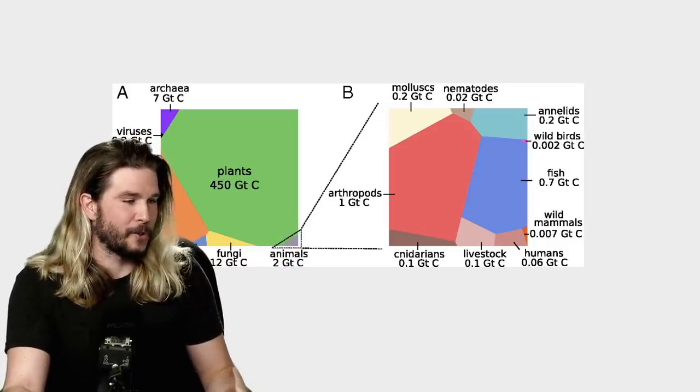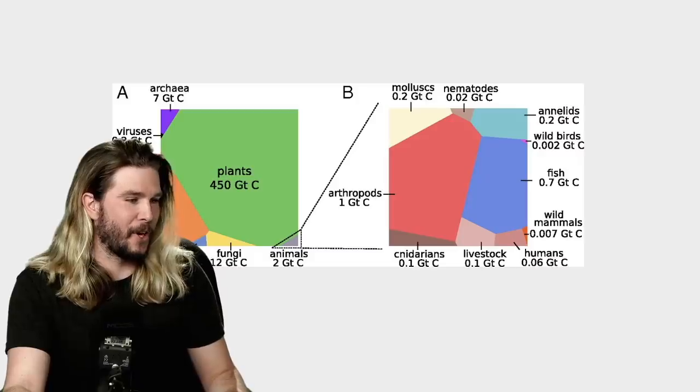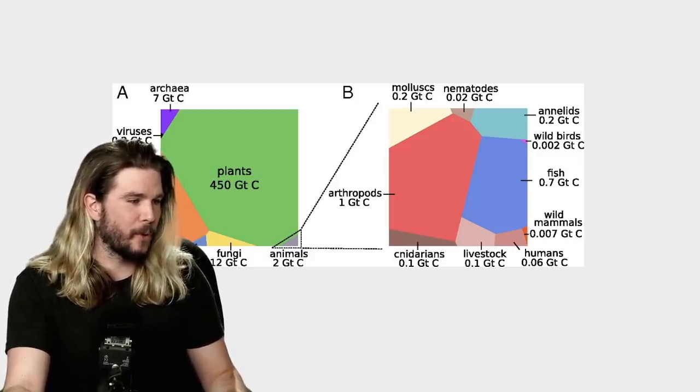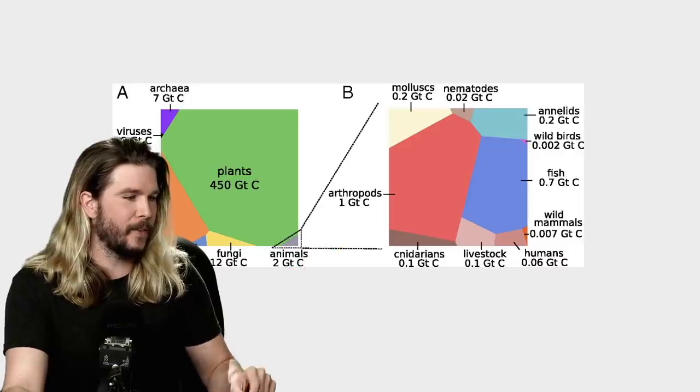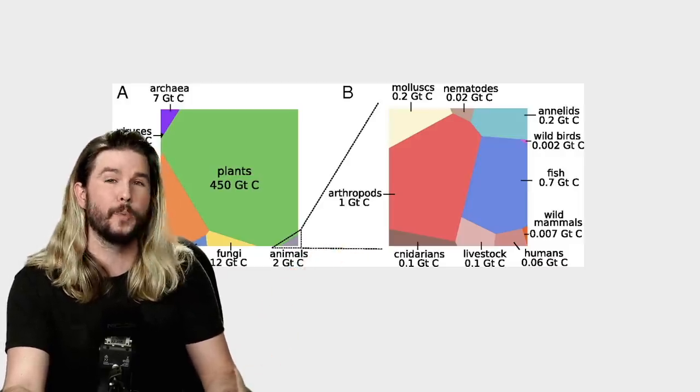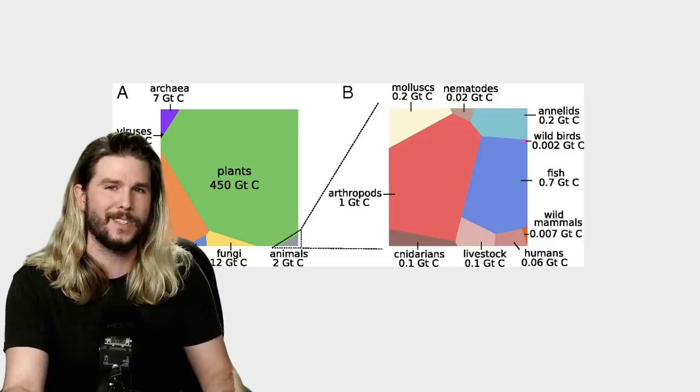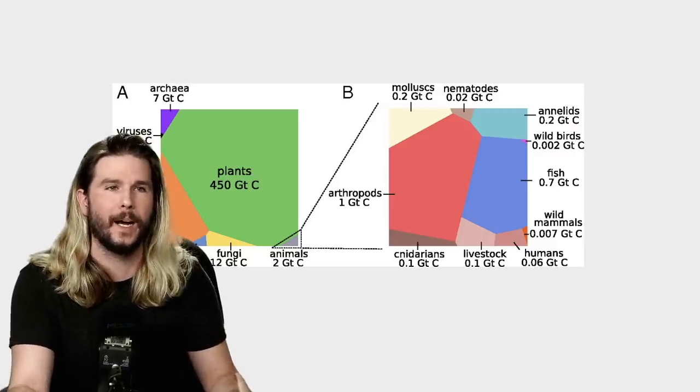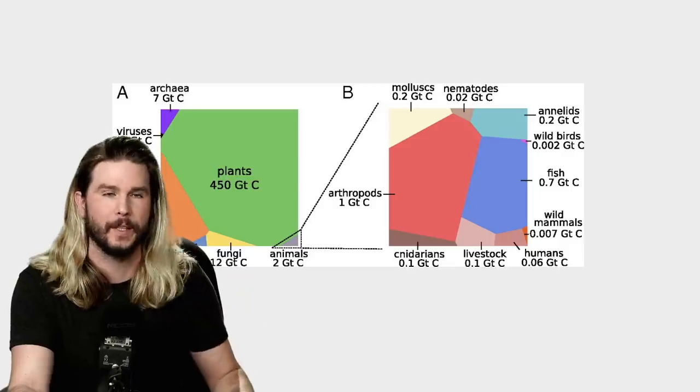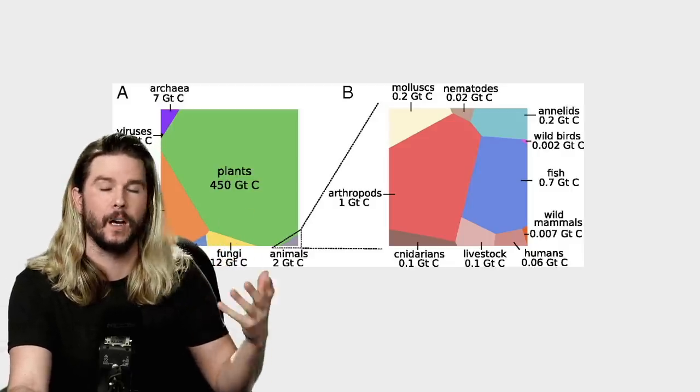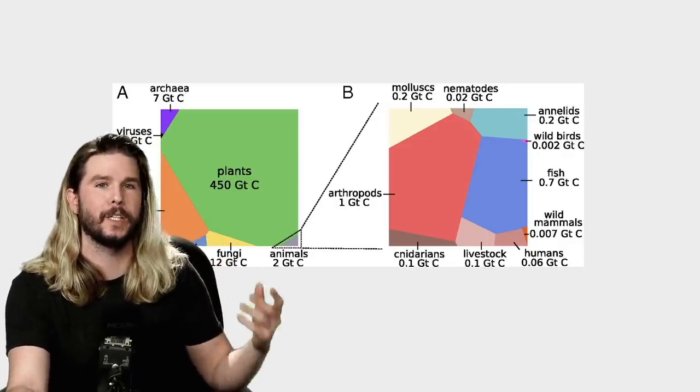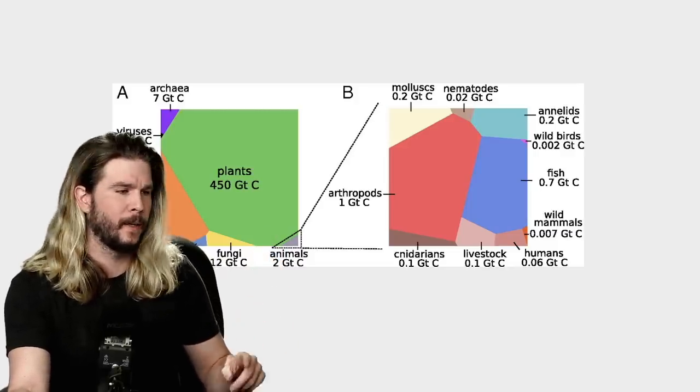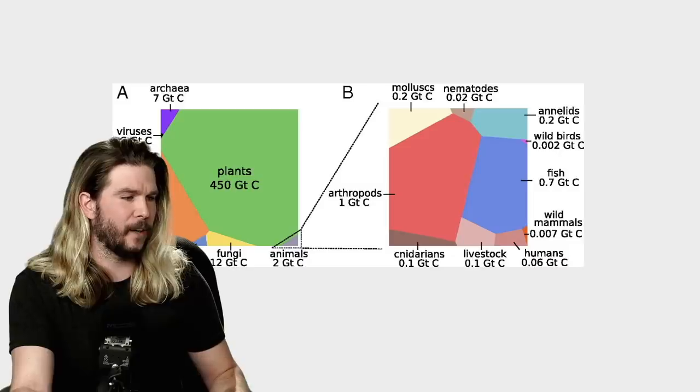There's a lot of mollusks, an awful lot of arthropods, a lot of fish of course. But look way down in the bottom right corner there: humans at 0.06 gigatons of carbon. So you're multiplying the kilograms by a trillion or something like that—a billion times a ton, which is a thousand kilograms, so a trillion kilograms.